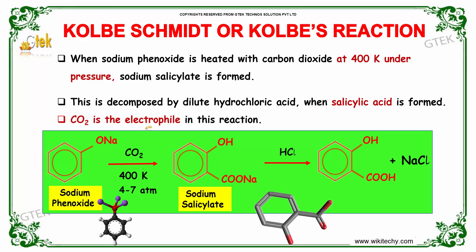CO₂ is the electrophile in this reaction. At 400 Kelvin under pressure of around 4 to 7 atmospheres, CO₂ is made to react with sodium phenoxide to obtain sodium salicylate, that is COONa in the ortho position. When this is made to react with HCl, we obtain a COOH group in the ortho position, along with sodium chloride as a byproduct.